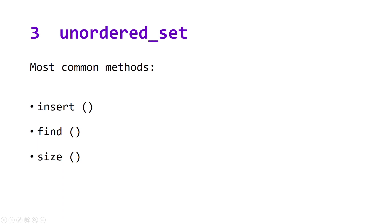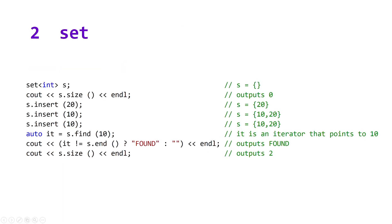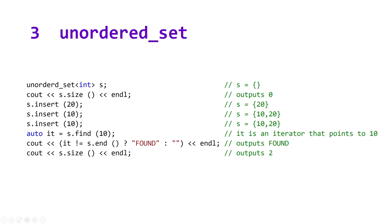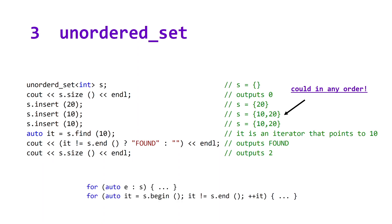Data structure number three: unordered set. Very similar to set, it has the same three most common methods — insert, find, and size — the difference being in the runtime. Each of these methods has constant runtime. If we compare the unordered set code example to the set code example, you'll notice that the only thing that changes is the declaration. The output is the exact same. The only difference between these two data structures is the order in which the elements are stored. For unordered set, they could be in any order, meaning that if you're using a range-based for loop or a regular for loop, when you use a set you loop through in sorted order, but when you use an unordered set it could be any order.